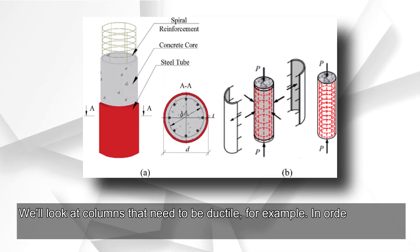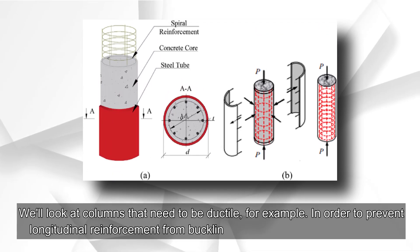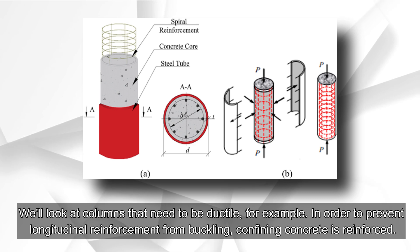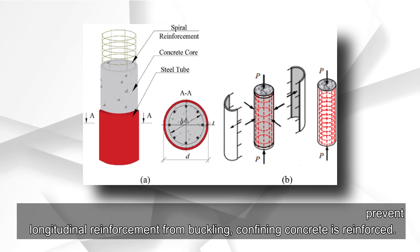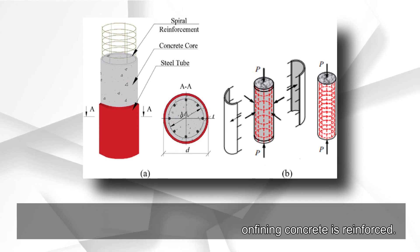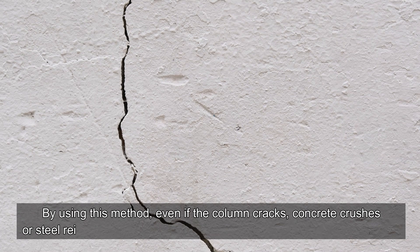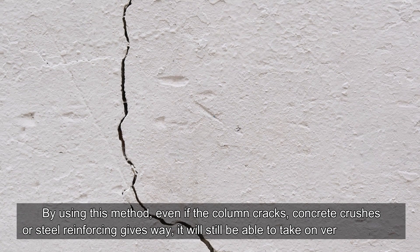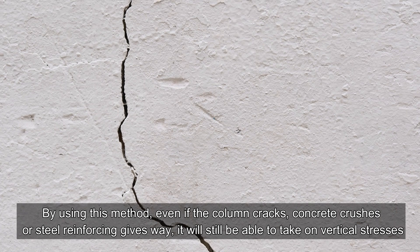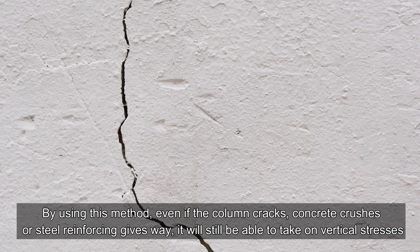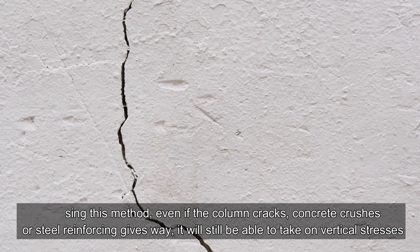For example, in columns that need to be ductile, confining concrete is reinforced to prevent longitudinal reinforcement from buckling. Even if the column cracks, concrete crushes, or steel reinforcing gives way, it will still be able to take on vertical stresses.